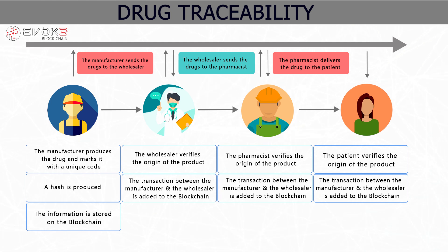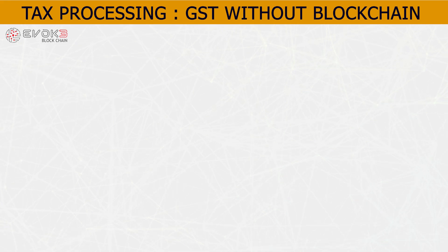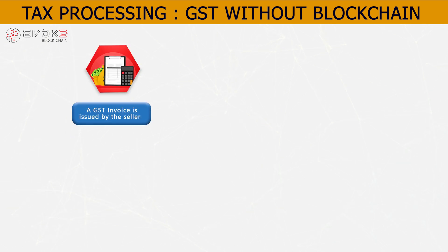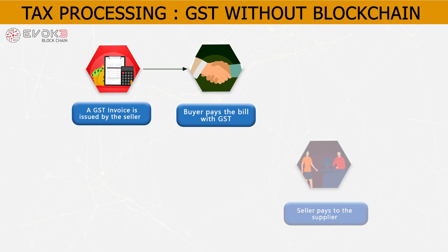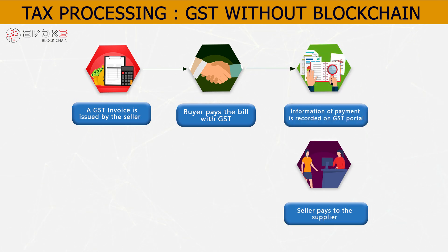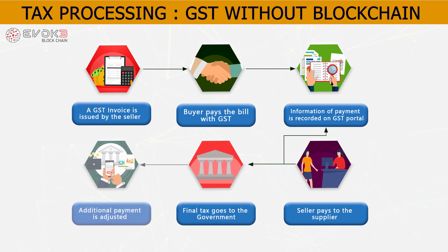Tax processing — let's see how GST tax processing works without blockchain. A GST invoice is issued by the seller. The buyer pays the bill with GST. The seller pays the supplier. Information of payment is recorded on the GST portal. Final tax goes to the government, and additional payment is adjusted.